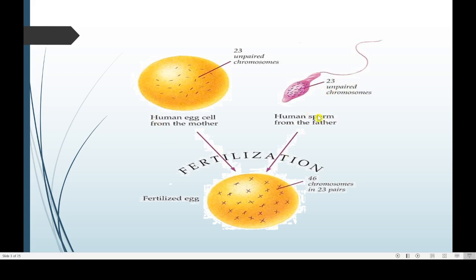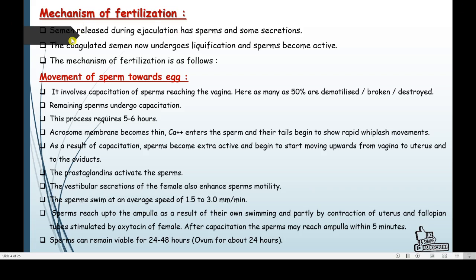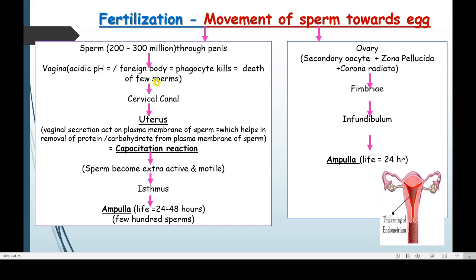When the fusion of sperm and ovum takes place — the pairing of these gametes — the zygote formed after fertilization contains 46 chromosomes. Now let us see the mechanism of fertilization. Semen released during ejaculation contains sperms and some secretions, and remains coagulated — that means thick. After ejaculation into the female reproductive tract it becomes liquefied, and when the sperm enter the female body they become active.